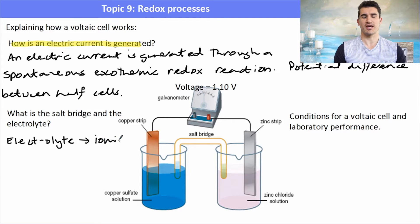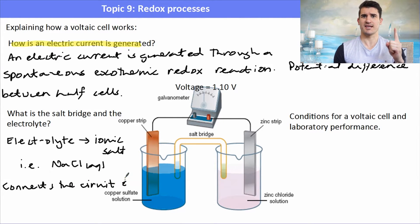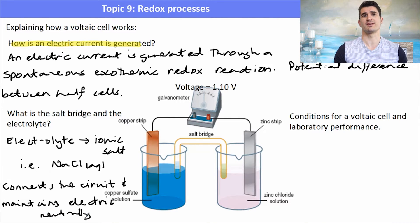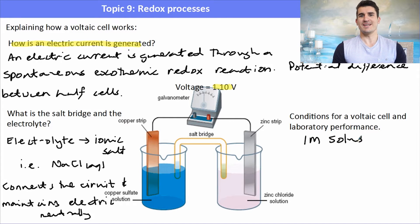The salt bridge has two jobs. First, it connects the circuit, composed of an electrolyte — an ionic salt soaked onto filter paper — with ions that can flow to each half cell. Second, it maintains electrical neutrality, balancing the charge in each half cell, because if the charge becomes too great the cell stops working and stops generating current. Remember: cations move to the cathode and anions move to the anode in the salt bridge, and electrons can only move through the wires — ions migrate in the salt bridge.